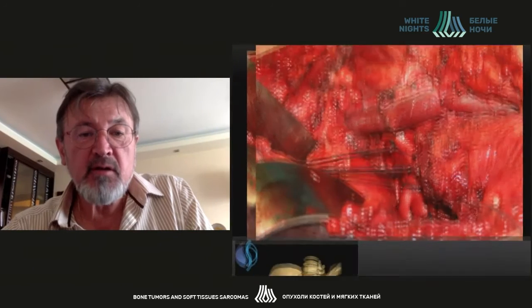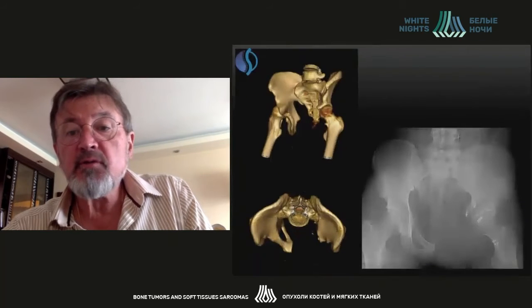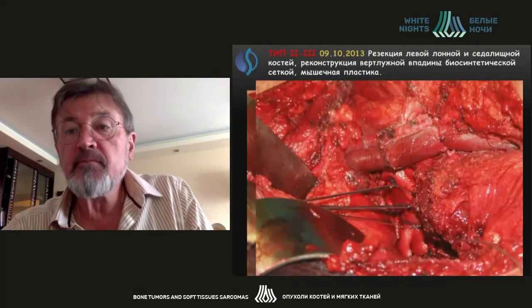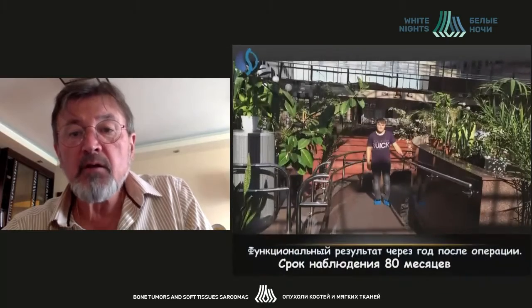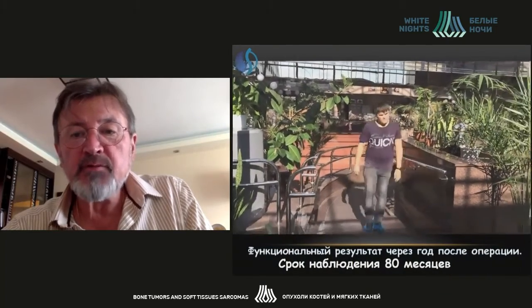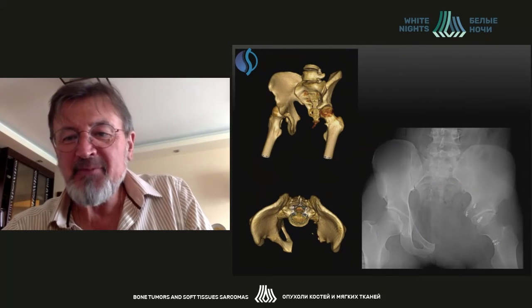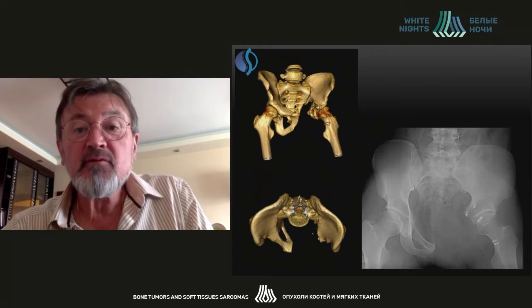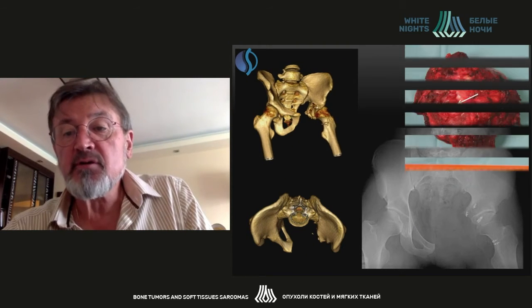These are the partially fixed soft tissues. Afterwards, we cut the threads and cover the remainder with the residual tissue. These are the functional outcomes, and this is the x-ray after surgery. You can see the anchor screws, which are very well visible, and this is the area of the acetabulum resection.